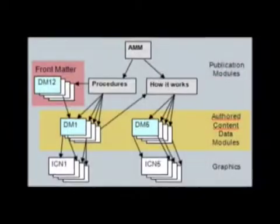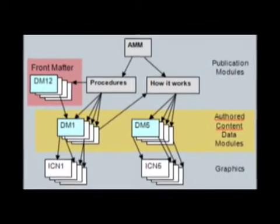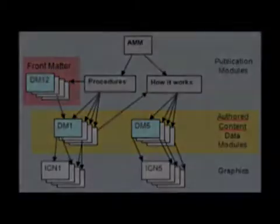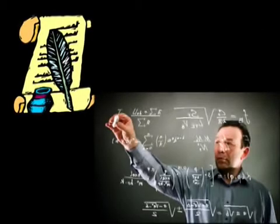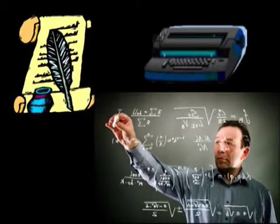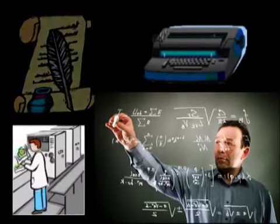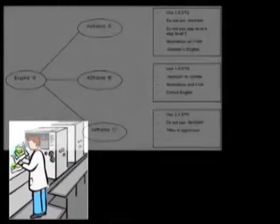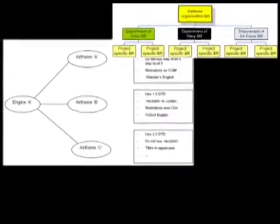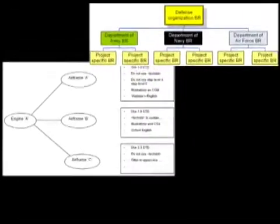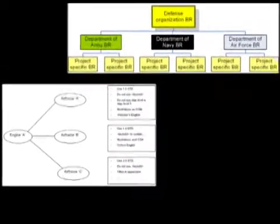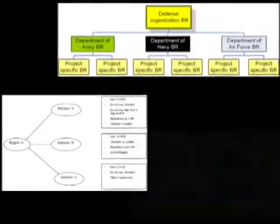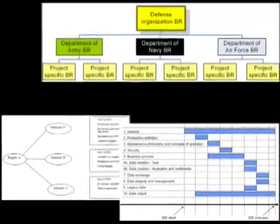The development of S1000D is a natural evolution of the information technology age. Over the past 100 years, we have migrated from handwritten information to the typewriter. Eventually, we progressed to typeset publications using computing systems. Today, we have very complex computing systems capable of managing vast quantities of information with the ability to customize a publication for specific end-users and specific instances of a product.